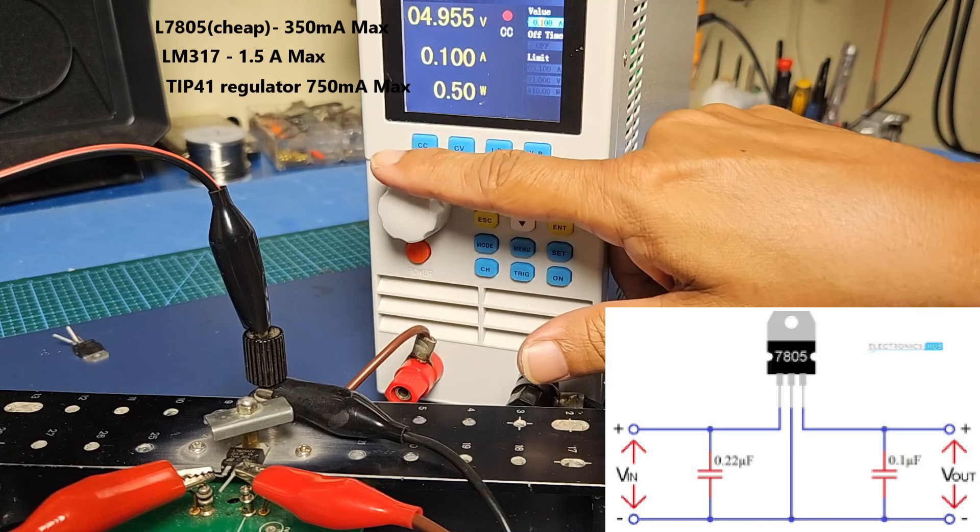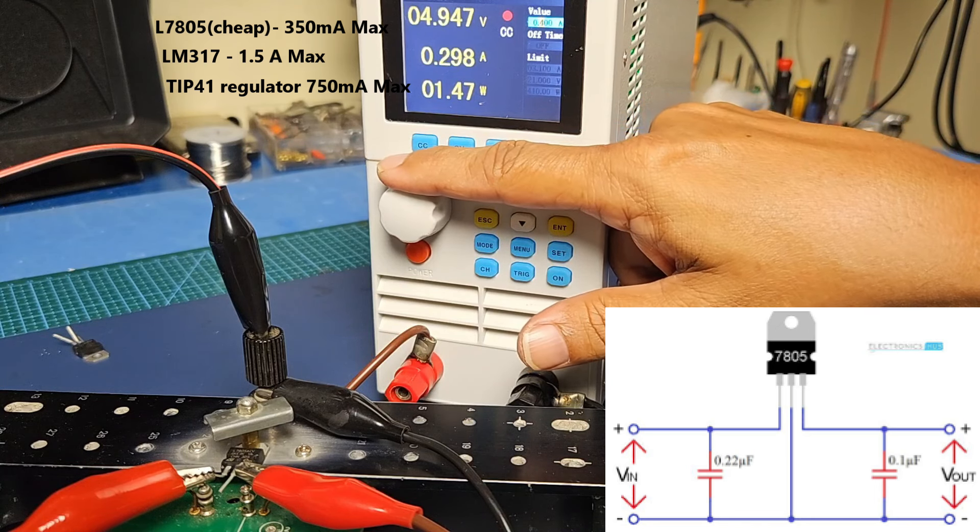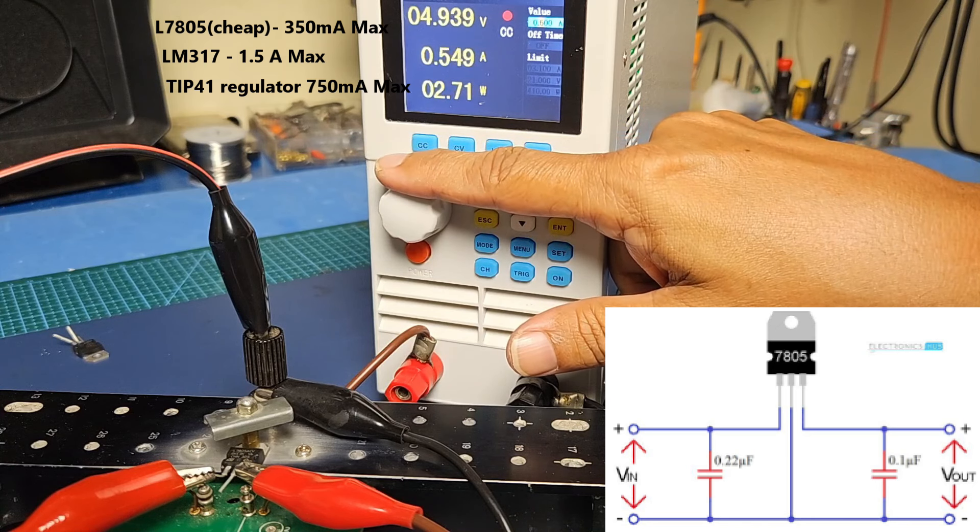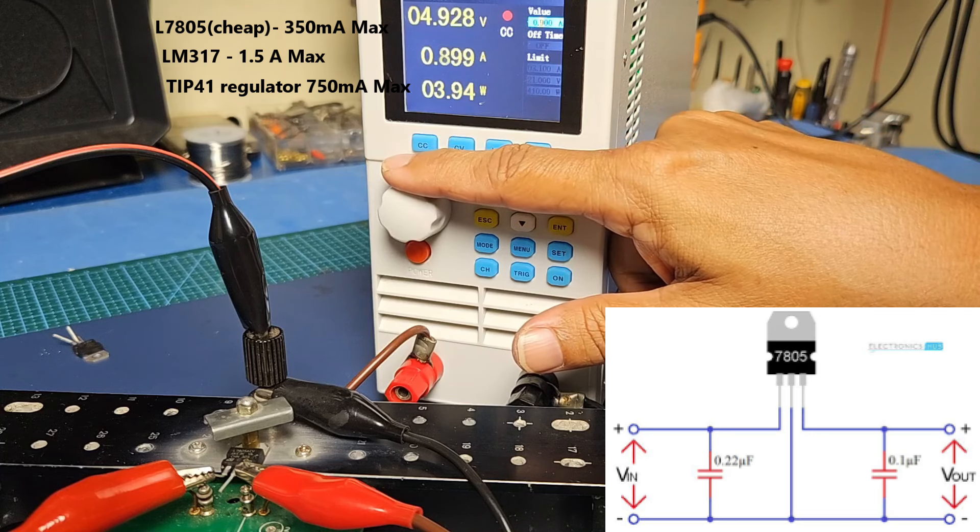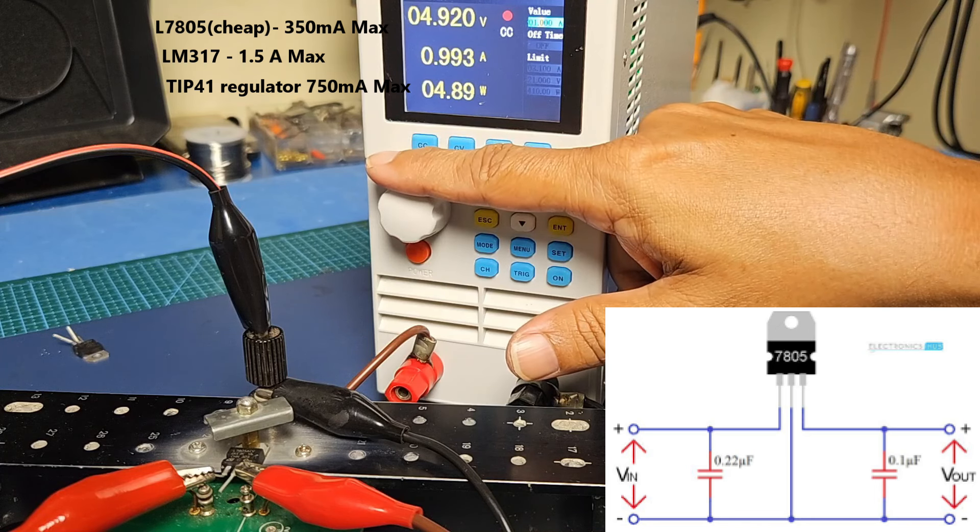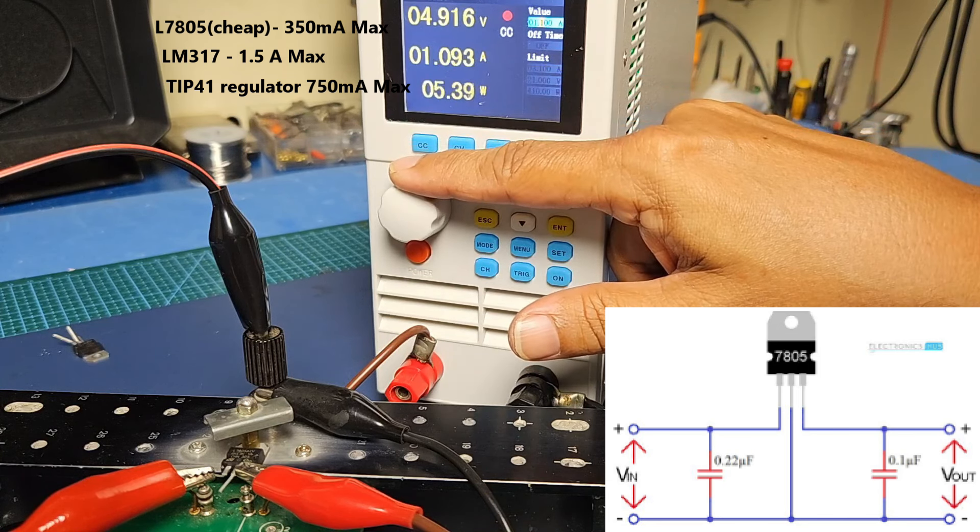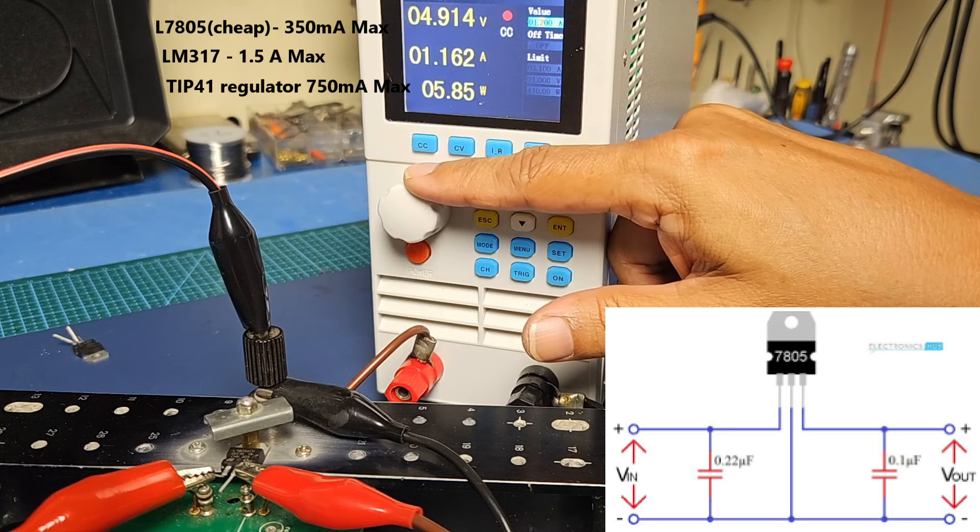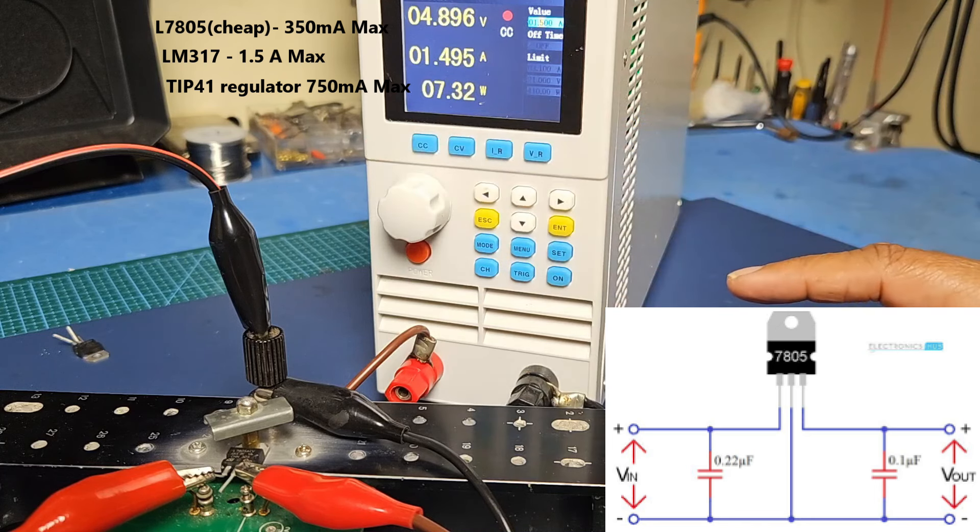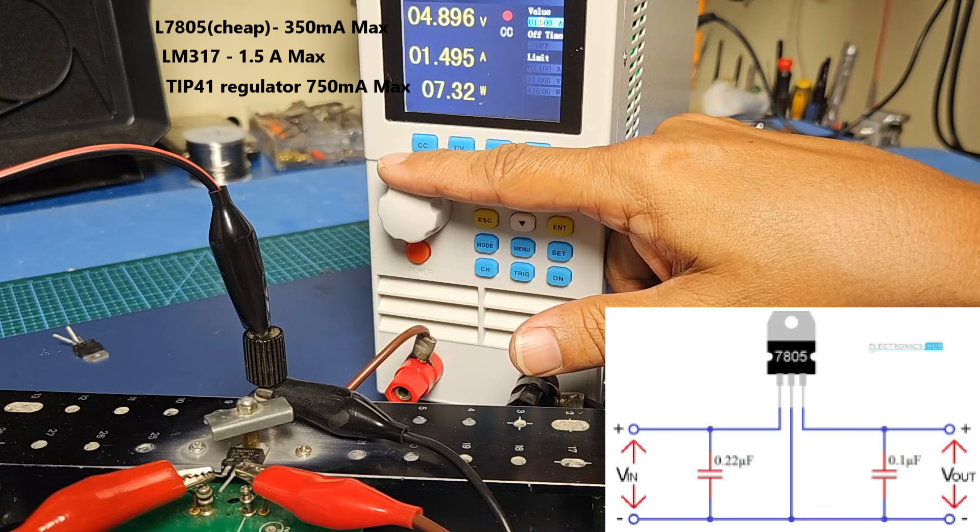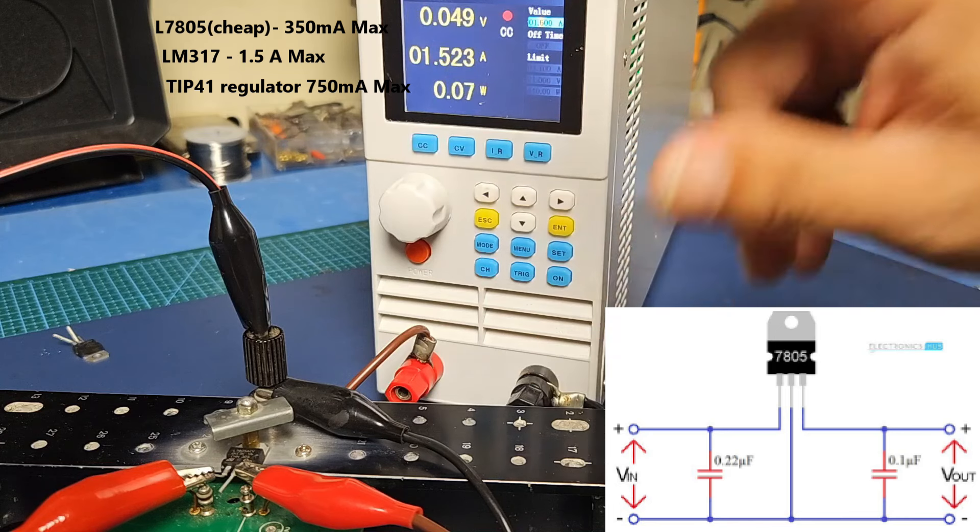Testing the LM317: at 100mA we get 4.9V, at 200mA 4.9V, at 300mA 4.9V, at 400mA 4.9V, at 500mA 4.9V, at 600mA 4.9V, at 700mA 4.9V, at 800mA 4.9V, at 900mA 4.9V. Even at 1.2A we get 4.9V, at 1.4A still good, at 1.5A we have 4.8V. At 1.6 amps the voltage drops to 0V.